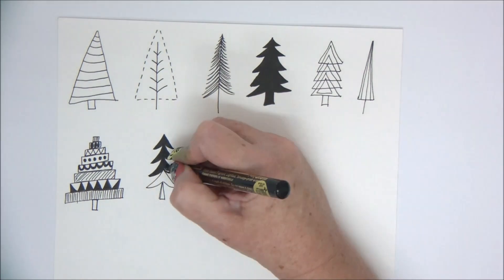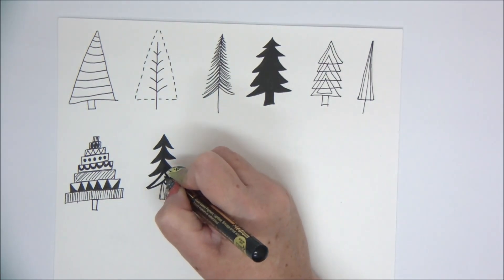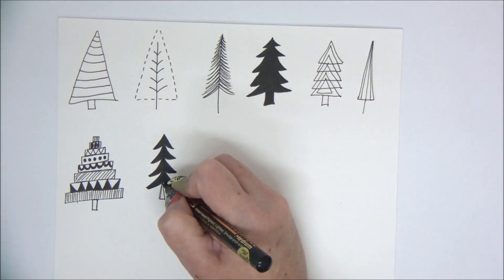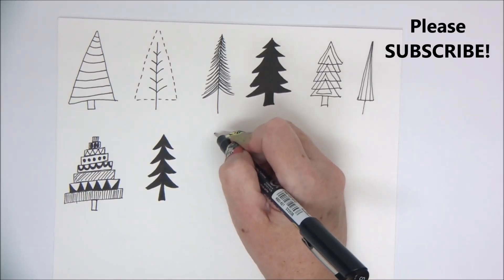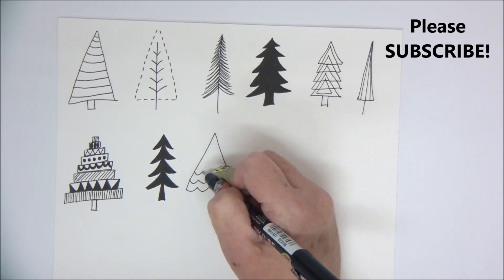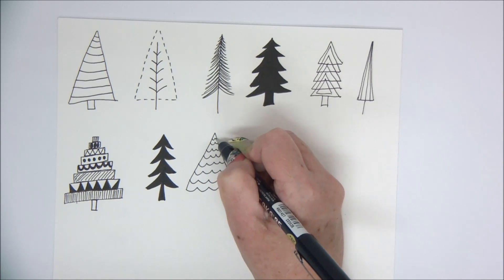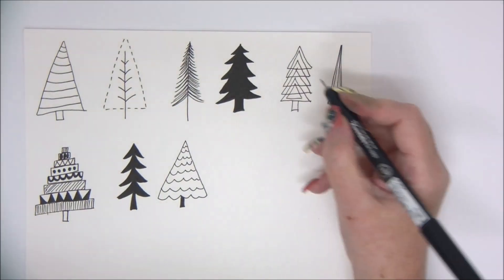At the end of the video I'm going to show you a few examples of how to make tags with these easy drawings. For our next tree, just going to make a triangle with a scalloped edge and then do the same pattern inside.